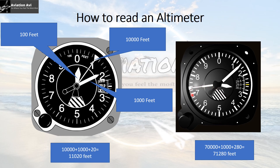In the second example, the long needle with a triangular head has crossed 7 but not reached 8, giving 7 × 10,000 = 70,000 feet. The longer needle has crossed 1 but not reached 2, giving 1,000 feet. The short needle has crossed 2 and is pointing towards the fourth division between 2 and 3, so that is 2 × 100 + 4 × 20 = 200 + 80 = 280 feet. The total reading is 70,000 + 1,000 + 280 = 71,280 feet.